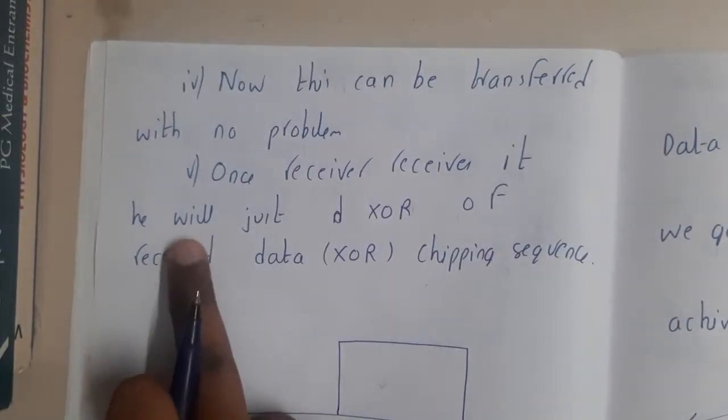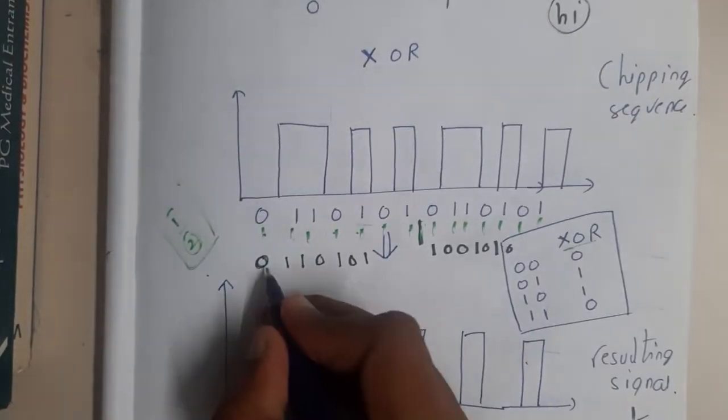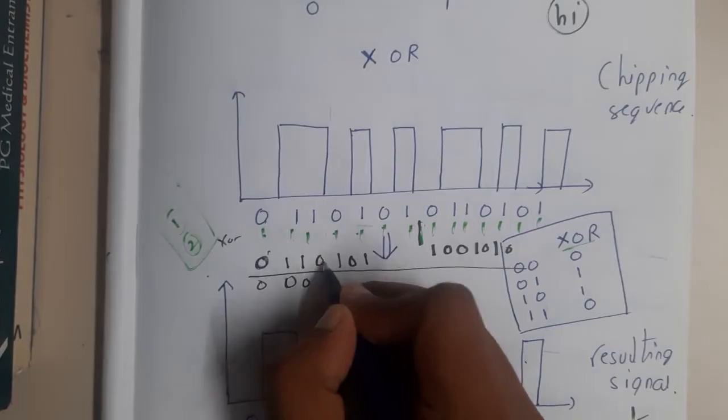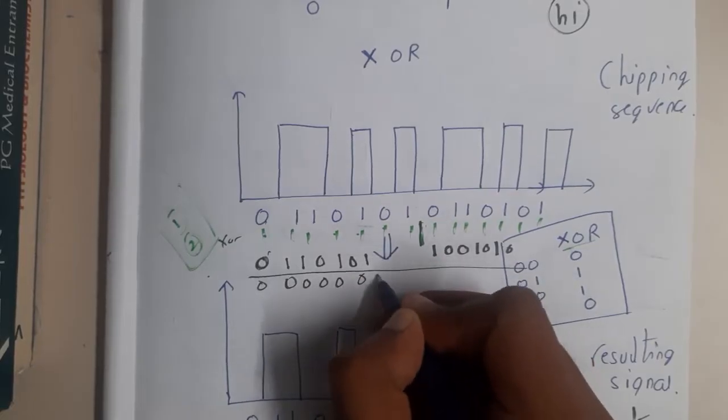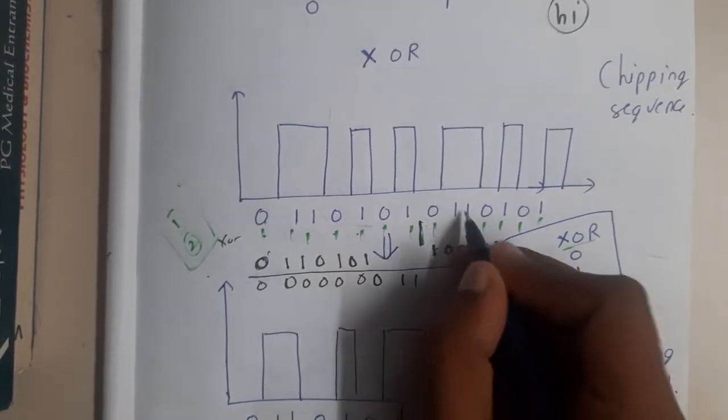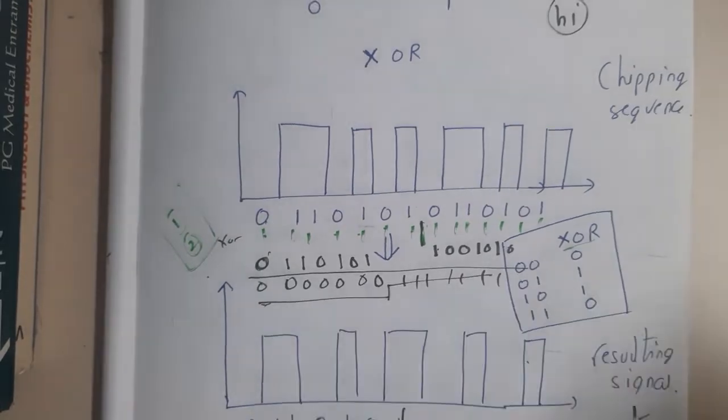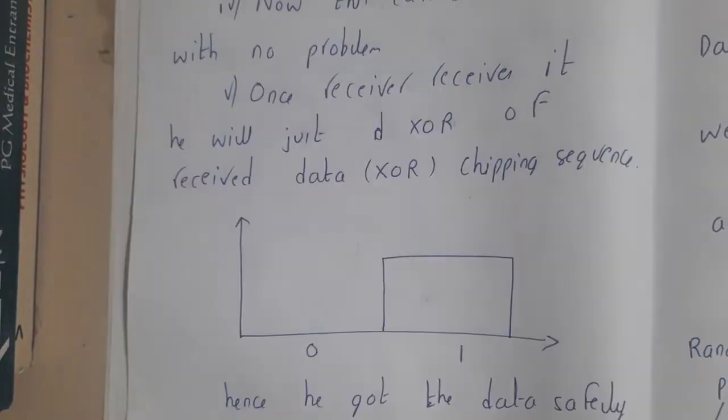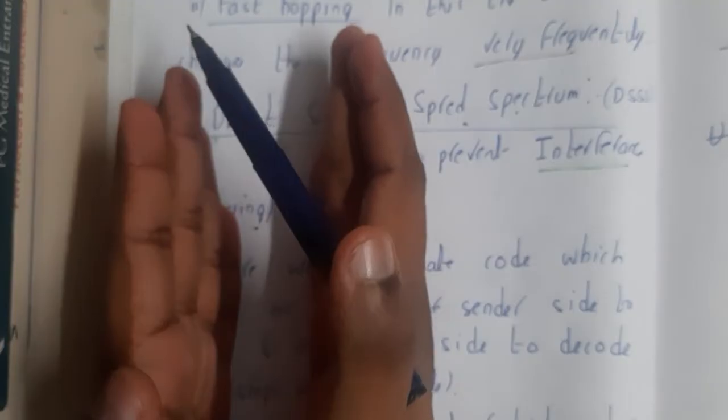This data can be transferred without any problem. Once the receiver receives it, he will do XOR of the received data with the chipping sequence. He performs XOR: 0 XOR 0 is 0, 0 XOR 1 is 0, 1 XOR 1 is 0, and so on. If you observe, we indirectly decoded the same data - we got 0 first, then 1. This whole method is Direct Sequence Spread Spectrum.